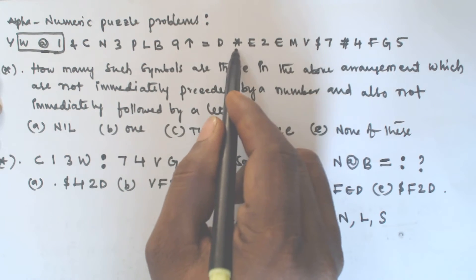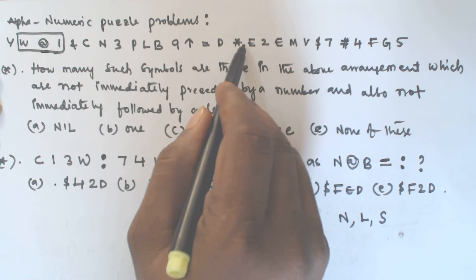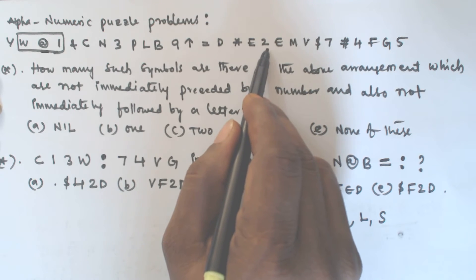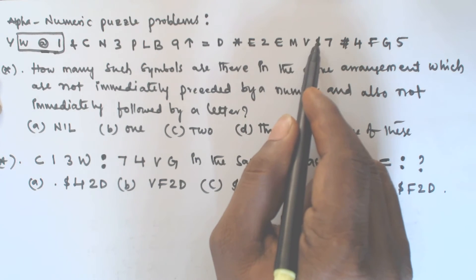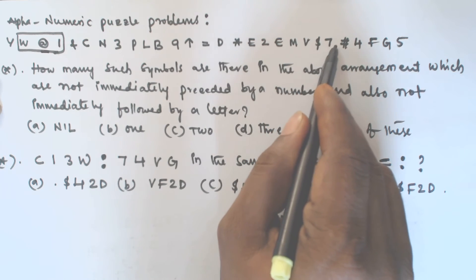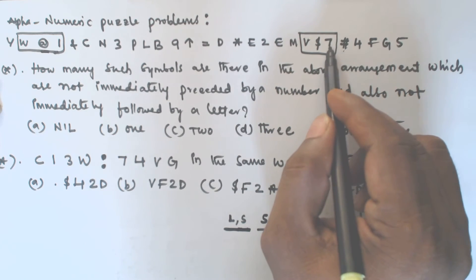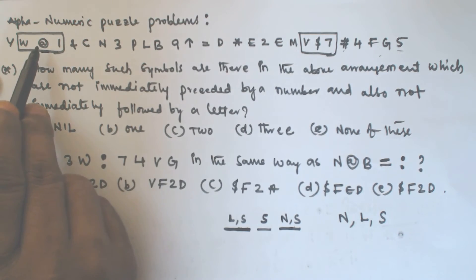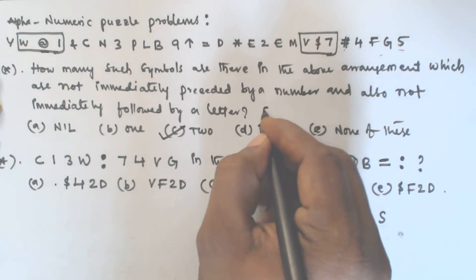The * symbol is preceded by a letter (E), which is acceptable, but it is followed by a letter, so we cannot take it. The € symbol is preceded by 2, which is a number, so it is not acceptable. The $ symbol is preceded by a letter (V) — acceptable — and followed by a number (7) — also acceptable — so this is our second valid symbol. The # symbol is preceded by a number, so we discard it. That gives us two symbols: @ and $. The answer for question 1 is option C (2).